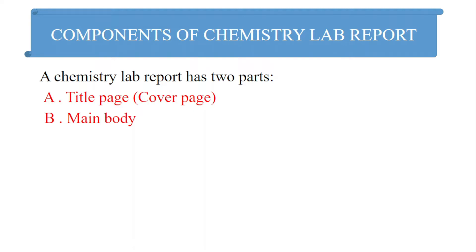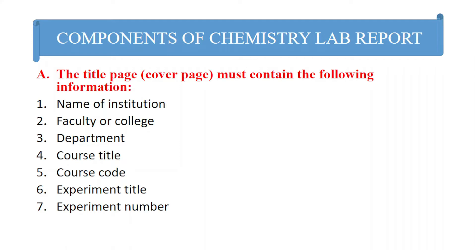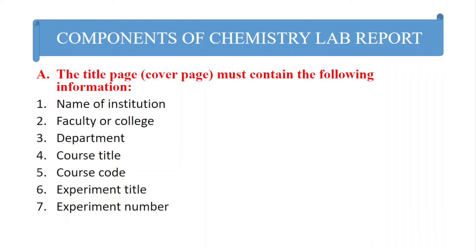The title page of a chemistry, biology, or physics lab report should have the following information. The first is the name of your institution — your university or college name — written at the top of the cover page. The second is the faculty or college, such as College of Natural Science or College of Health Science. Then write your department specifically, for example Department of Chemistry, Department of Biology, Department of Medical Laboratory, or Department of Pharmacy.